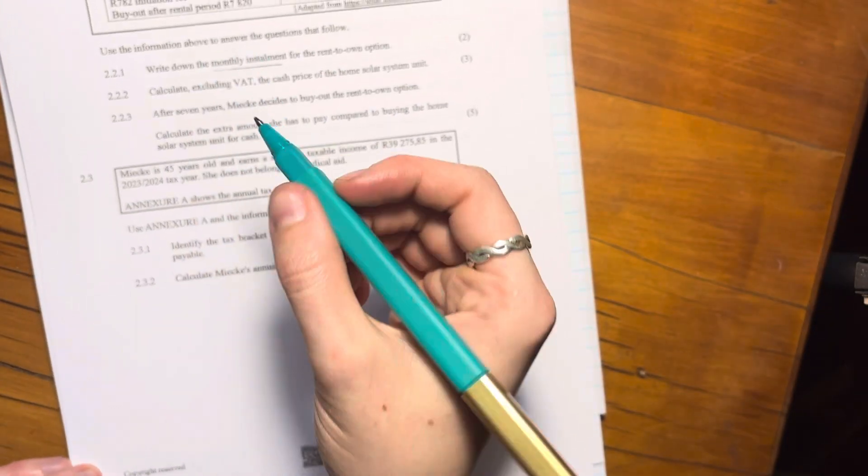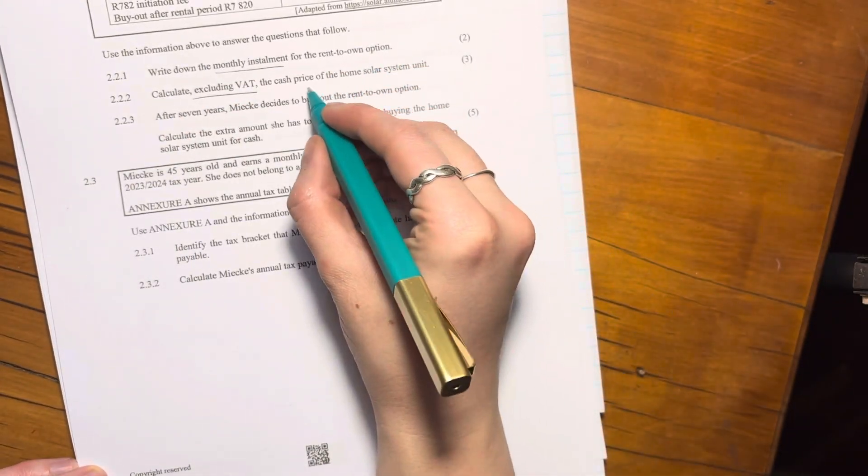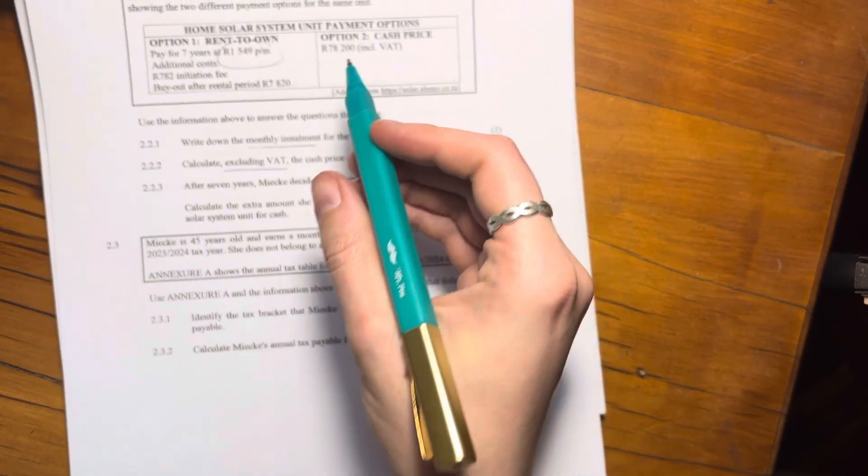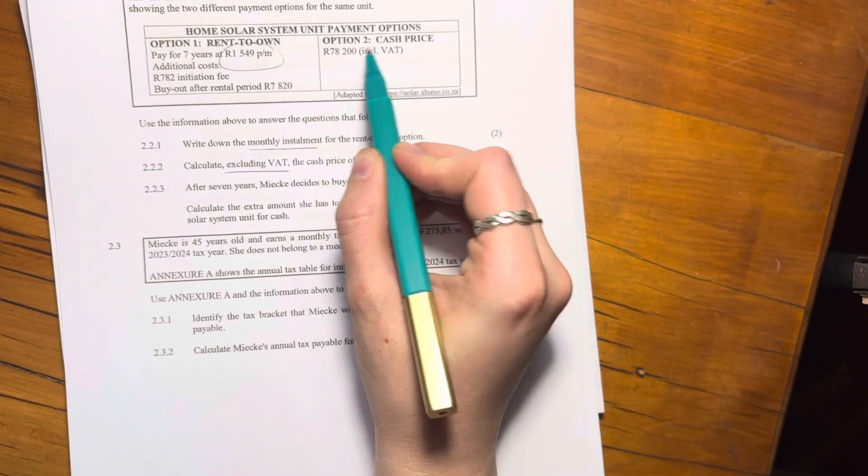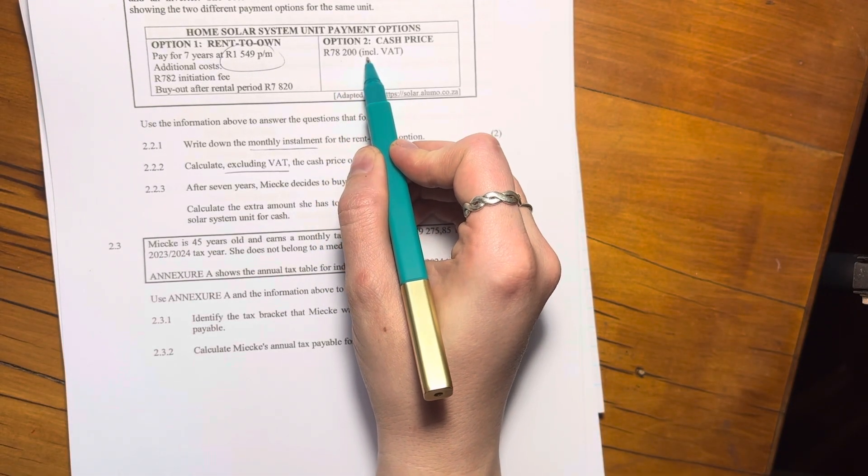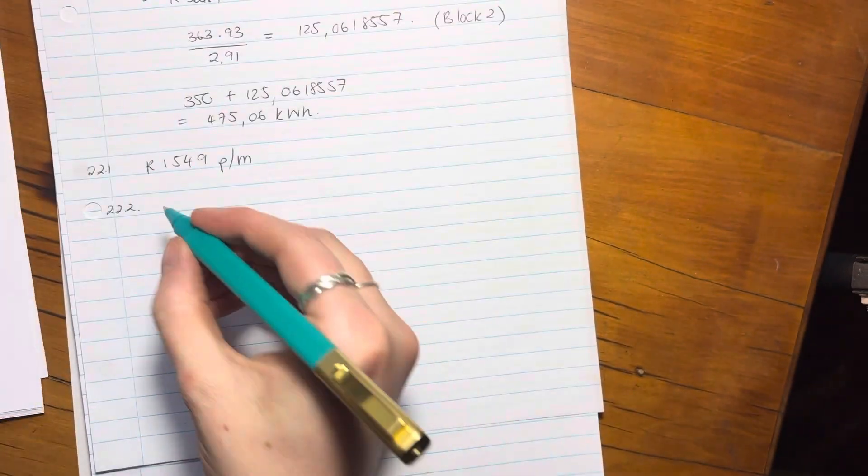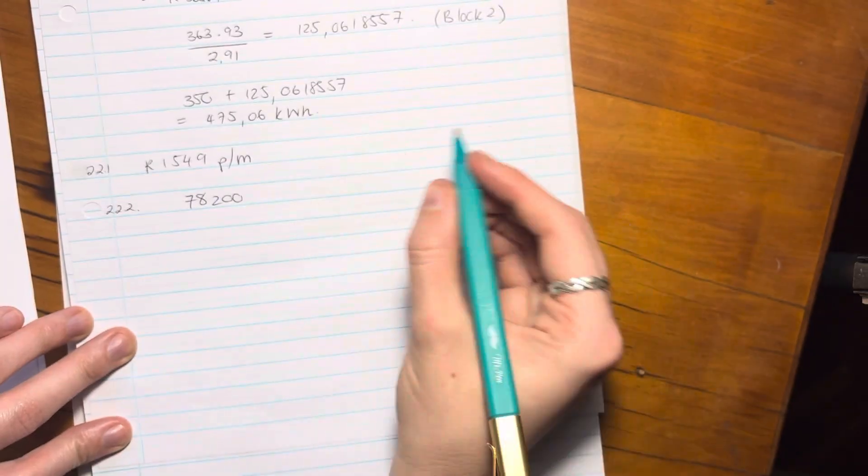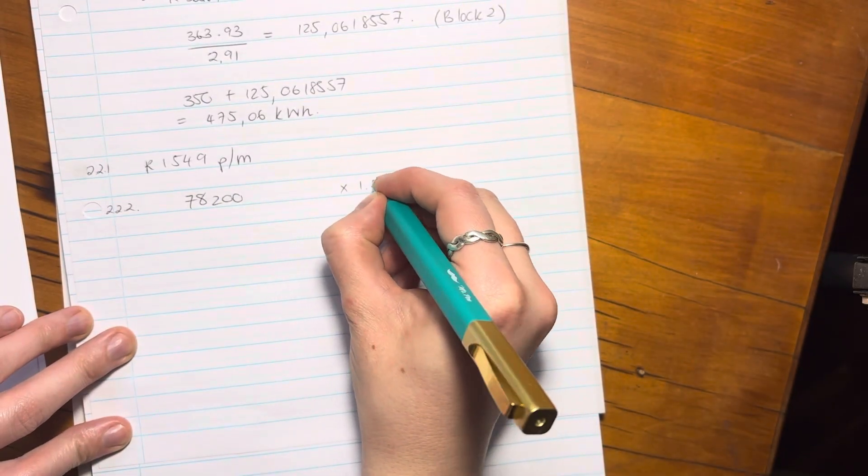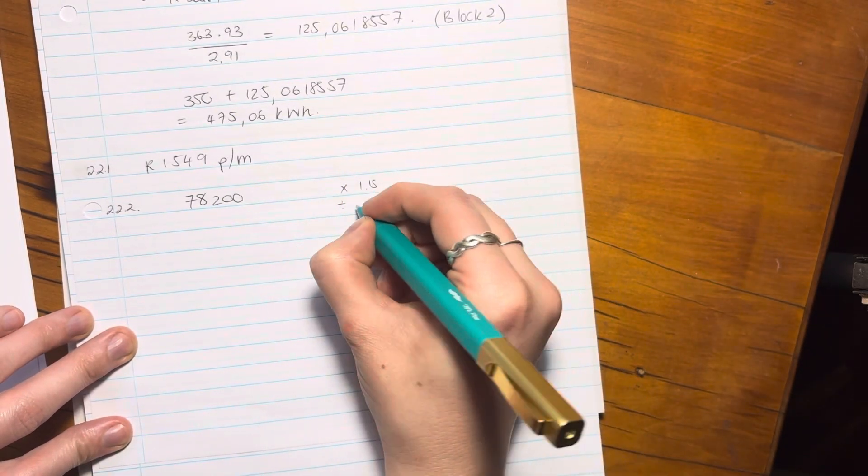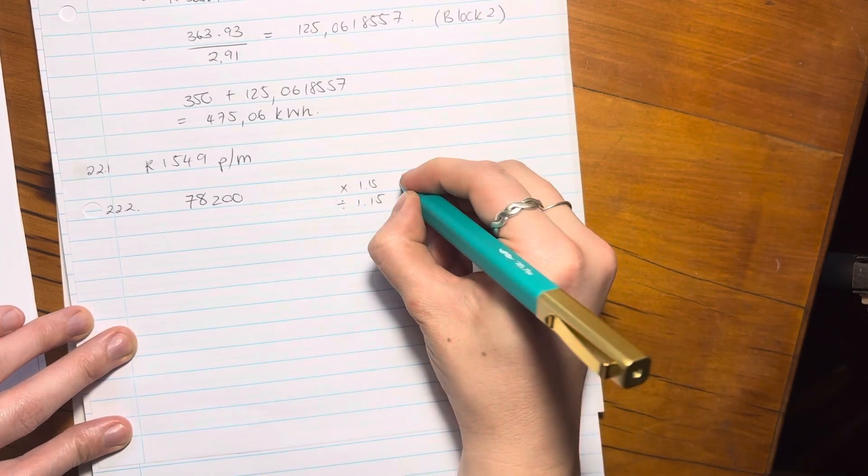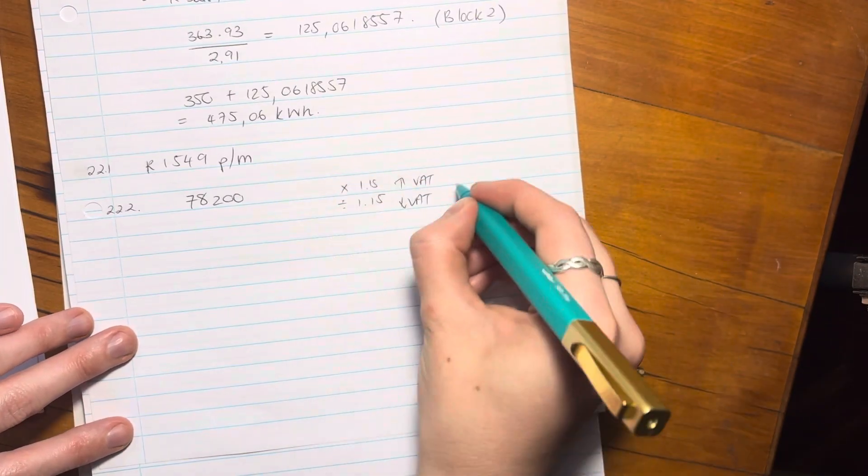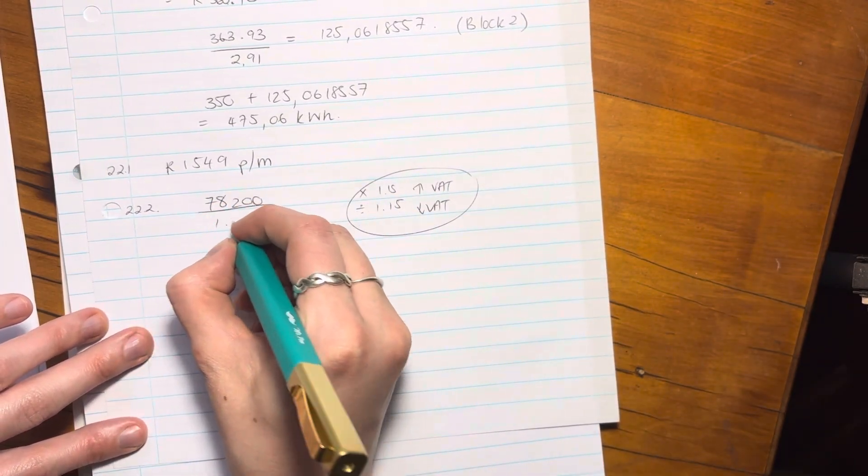So then it says calculate, excluding VAT, the cash price of the home solar system unit. The home solar system unit was R78,200 and it said that it includes VAT. So now we want to take that out. So we're going to say R78,200. Remember when we want to increase by VAT, we times by 1.15 and if we want to decrease by VAT, we divide, right? So that's what we're increasing for VAT and that's where we're taking VAT out. So here we're just going to divide it by 1.15.